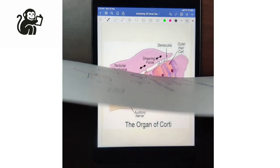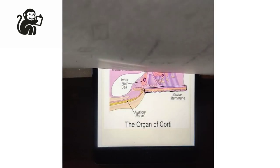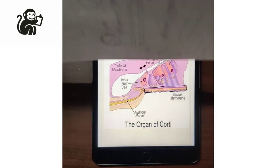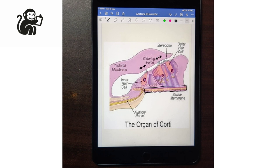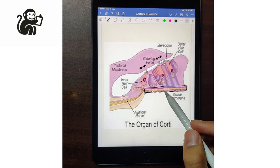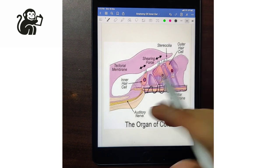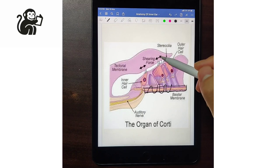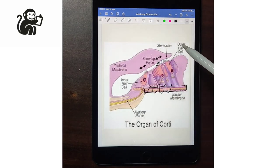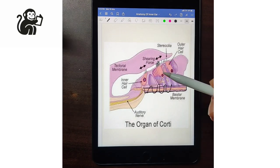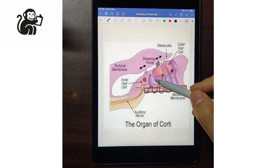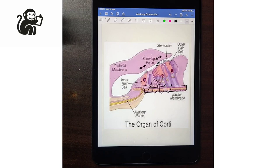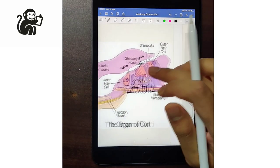In the apex, less frequency is required, whereas in the base, more frequency is required. Because of the movement of the basilar membrane, when sound arrives, the basilar membrane gets displaced, and the hair bundles attached to the tectorial membrane also get displaced. Because of this movement, the hair cells get depolarized or stimulated, and the stimulation travels from the nerve fibers towards the brain where we receive the signal of the sound.